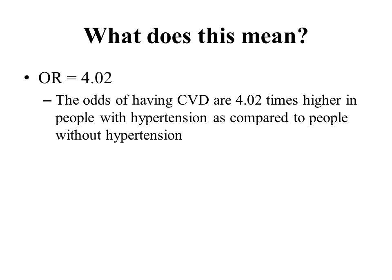Either way we do it, we get an odds ratio of 4.02. This means the odds of having cardiovascular disease are about four times higher in people with hypertension compared to people without hypertension. In other words, people with hypertension are much more likely to get cardiovascular disease. Odds are just another way of measuring likelihood — this odds ratio of 4 means it's about four times more likely to occur in hypertensive people than non-hypertensive people.